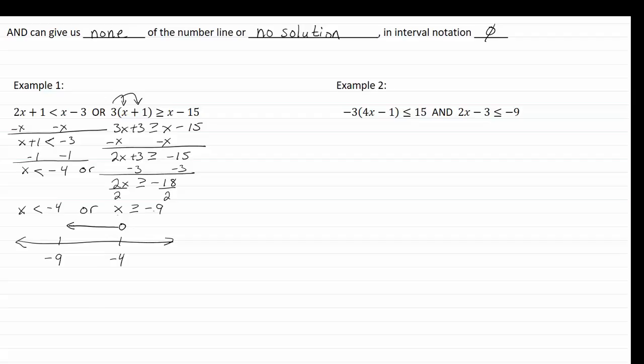X is greater than or equal to negative nine, so we're going to have a closed dot there. And x is greater than that, so that's going to positive infinity.